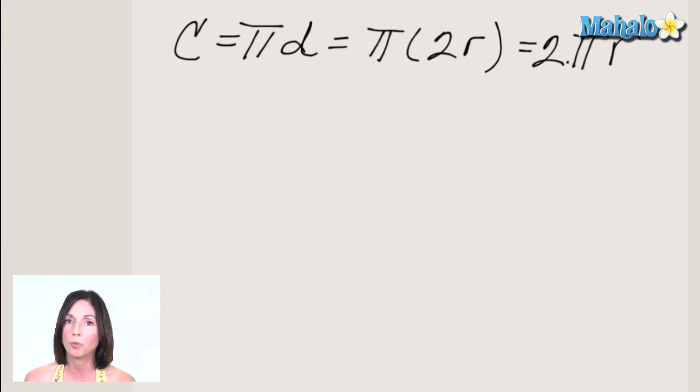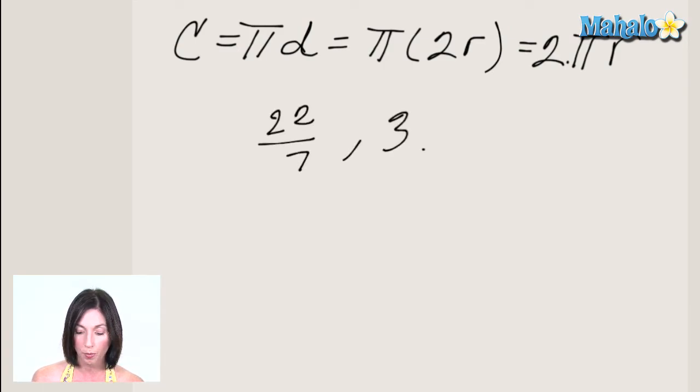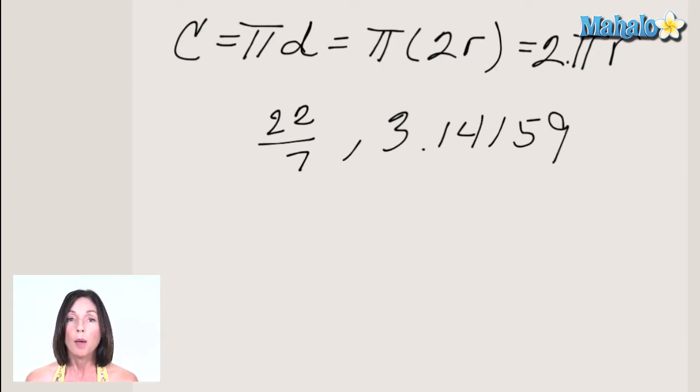Now pi is actually an irrational number, so we can't actually write it as a fraction or a terminating decimal, but you can approximate pi if you're doing calculations. You can approximate pi as 22 over 7, or as about 3.14159, something like that, but those are just approximations. They aren't exact, and that's an important thing to remember.